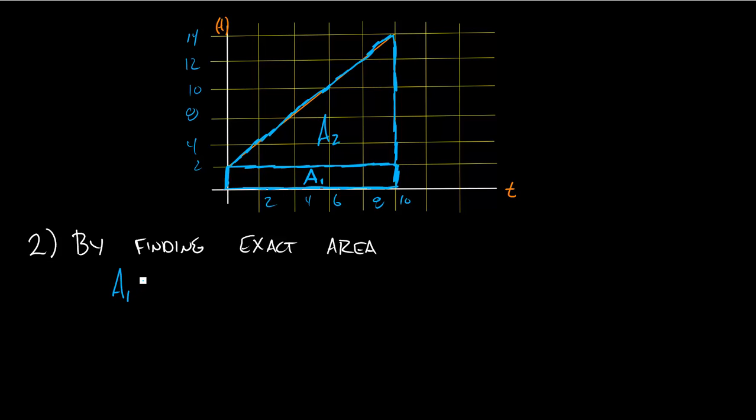Area 1 is a rectangle, so I can just do my length times my height. My length here is 10 hours and my height here is 2 miles per hour. So what I get here is the area A1 represents a total distance traveled of 20 miles.